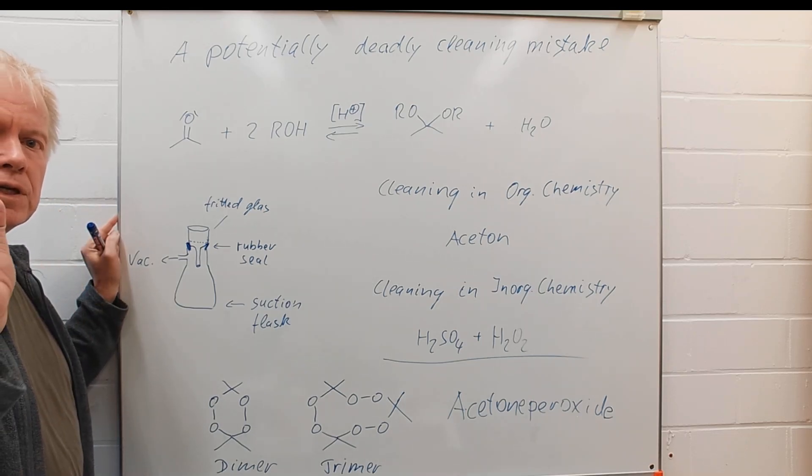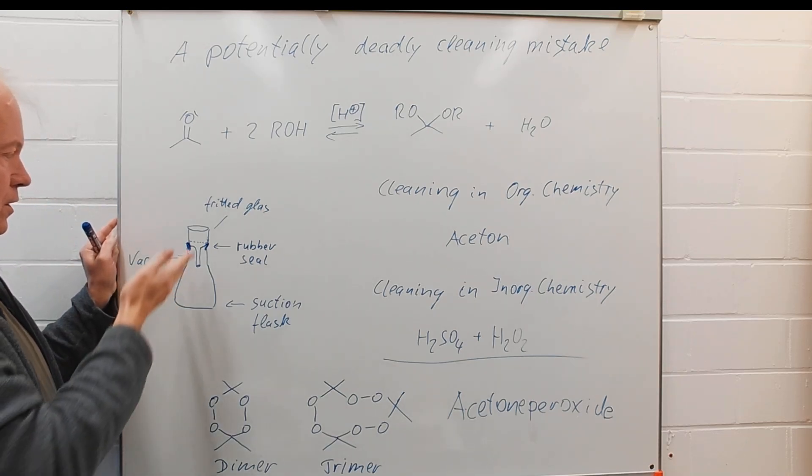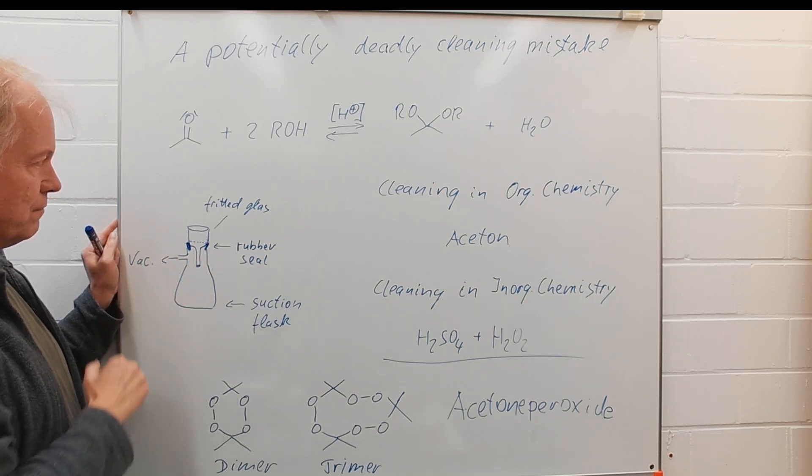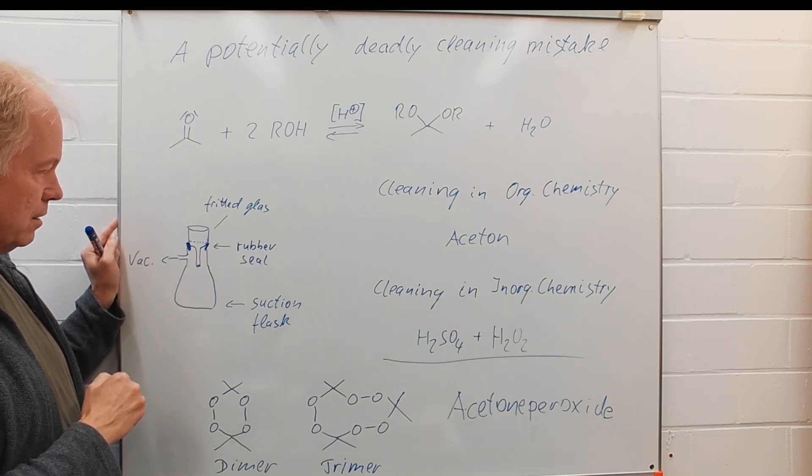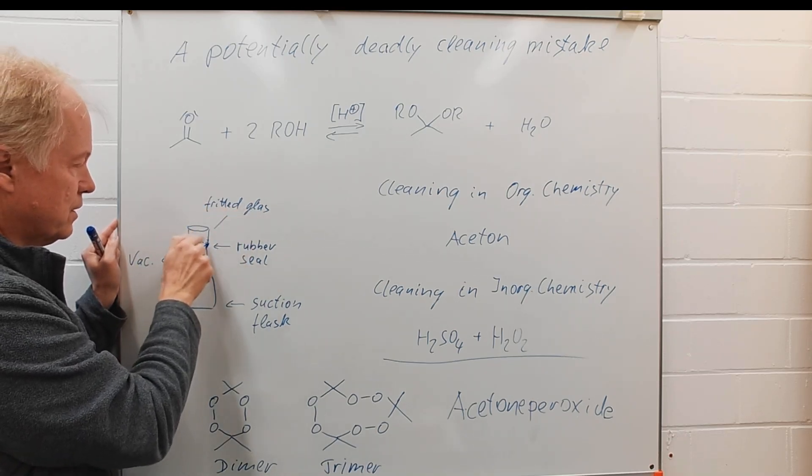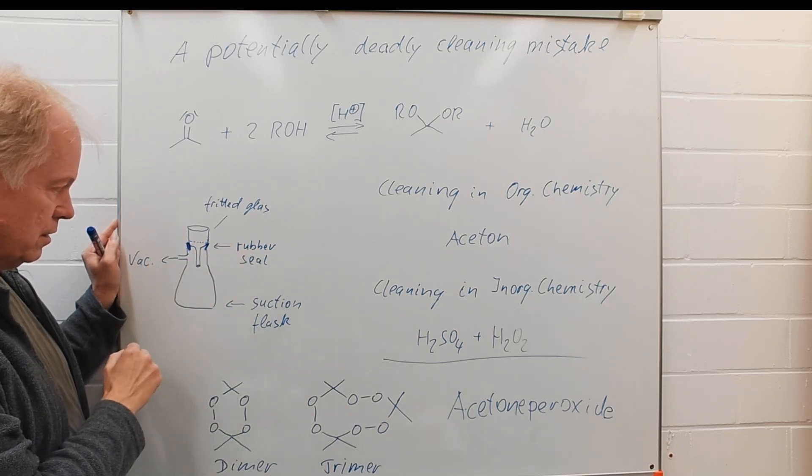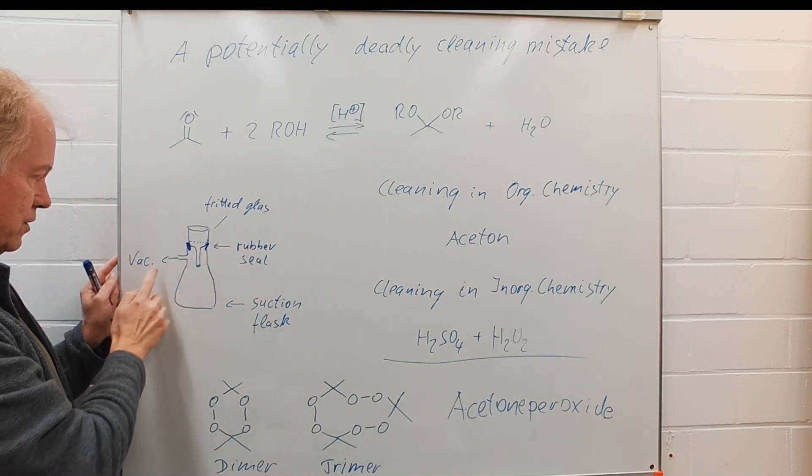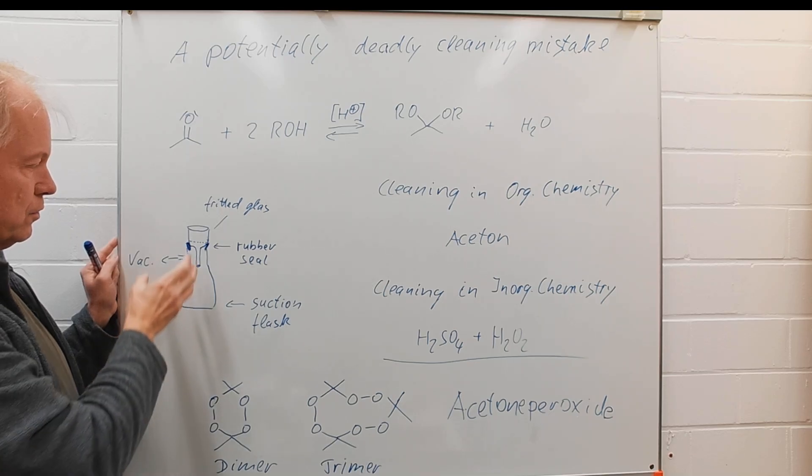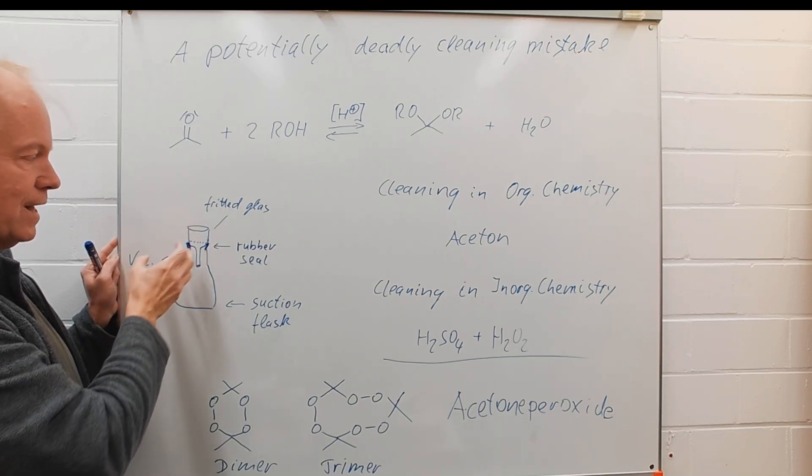Now to the cleaning problem. Let's assume we have this type of setup: we have a fritted glass here, this rubber ring or rubber seal, and a suction flask with vacuum applied. We use something like that for filtering off solid material in reactions in organic chemistry.